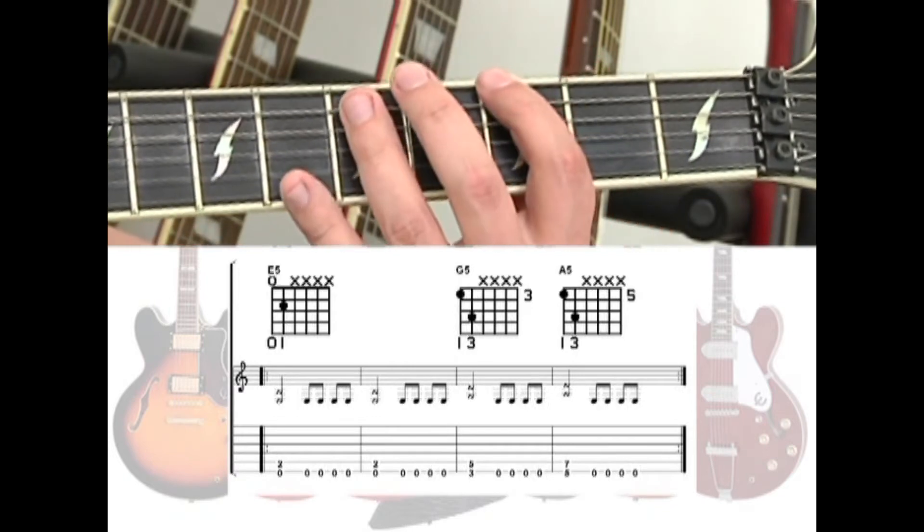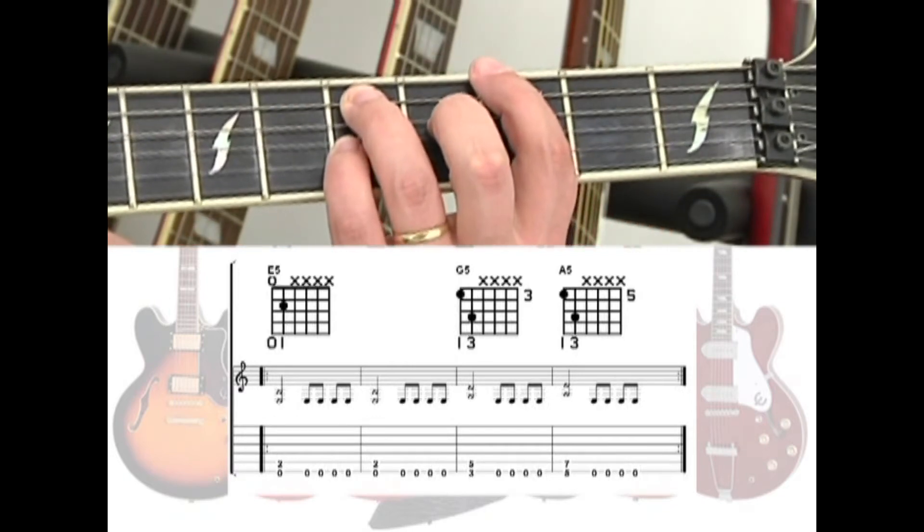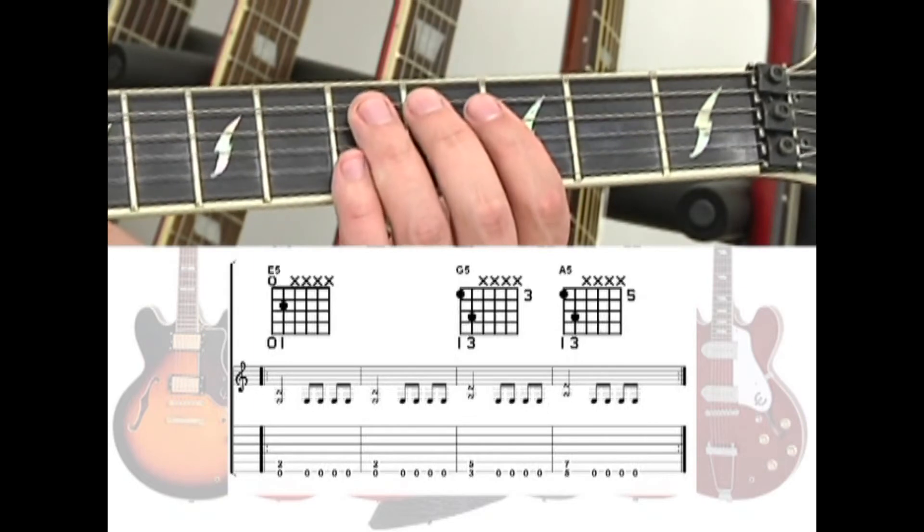Move up to the 3rd fret for the G5. One, two, then open pedal tones, 3 and, 4 and.